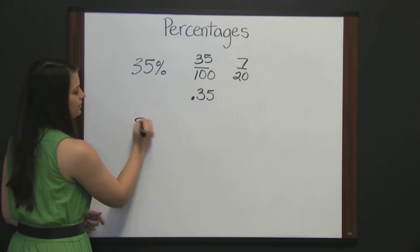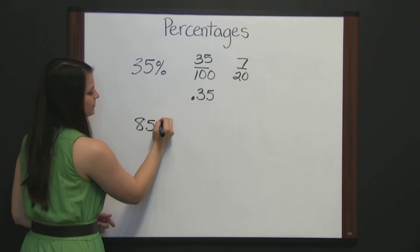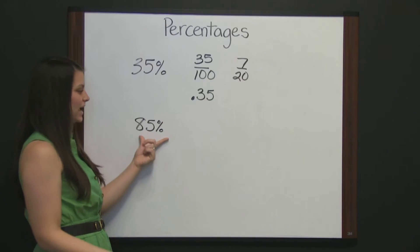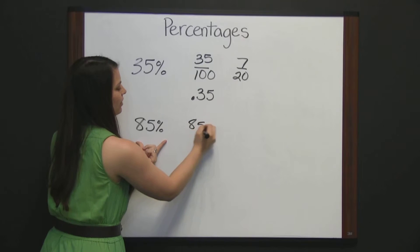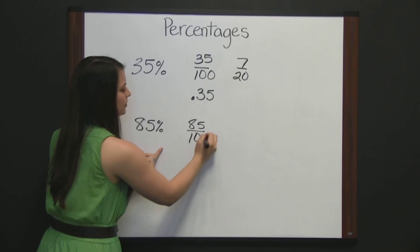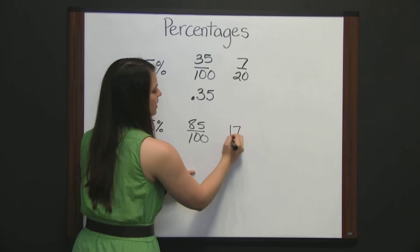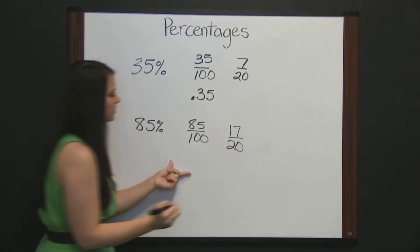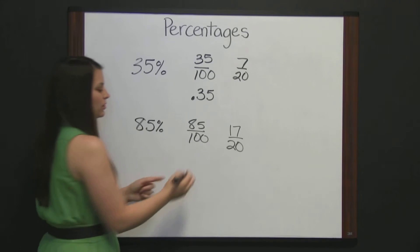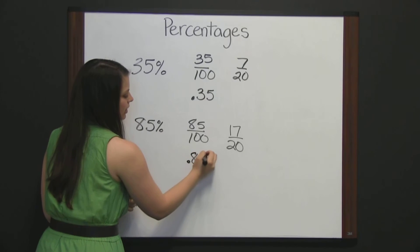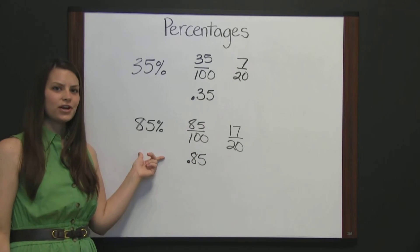Let's take 85%. 85% means 85 out of 100, which can also be simplified to 17 twentieths. And 85 hundredths can be written as a decimal, 0.85.